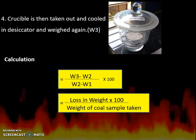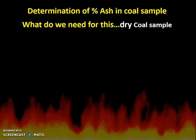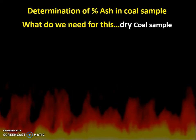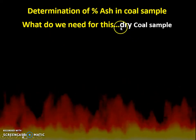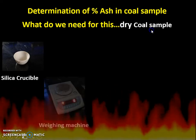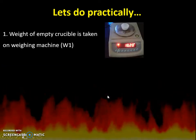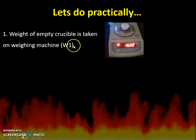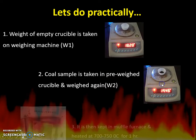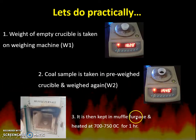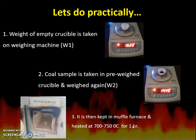The same practical is performed for percentage ash, with the key difference that the temperature is 700 to 750 degrees Celsius. You again use a dry coal sample, silica crucible, weighing machine, desiccator, and muffle furnace. The weight of the empty crucible is taken as W1 grams, the crucible with coal sample as W2 grams, and then it is kept in the muffle furnace at 700 to 750 degrees Celsius for one hour.